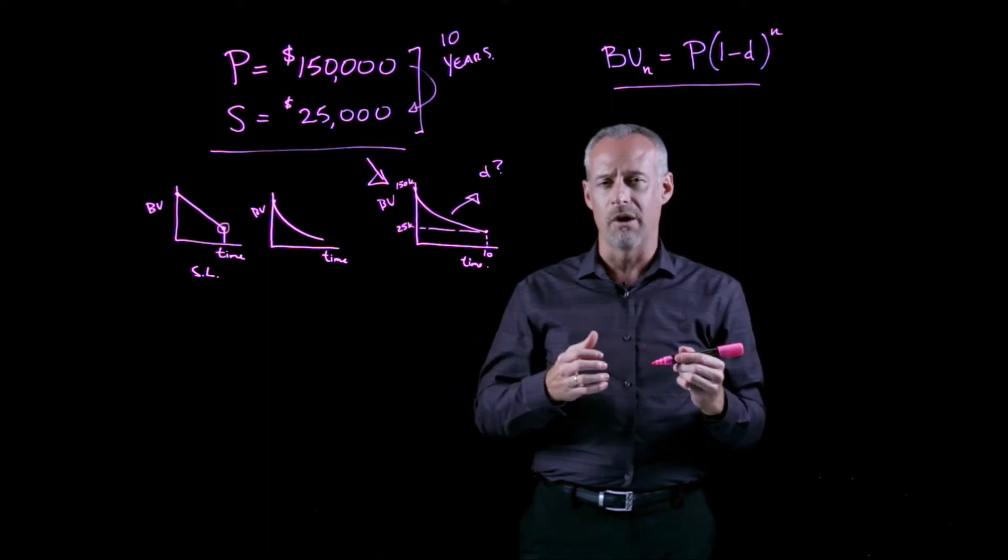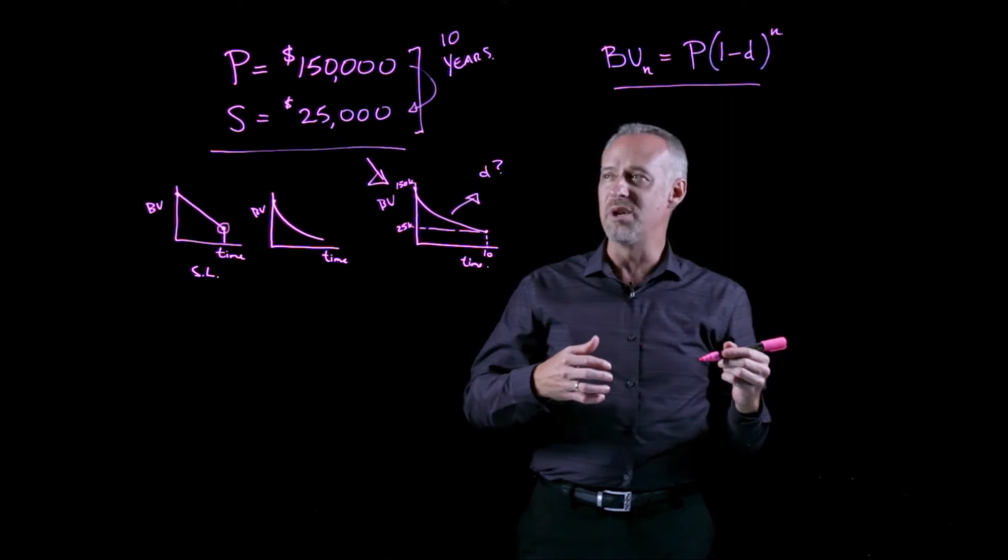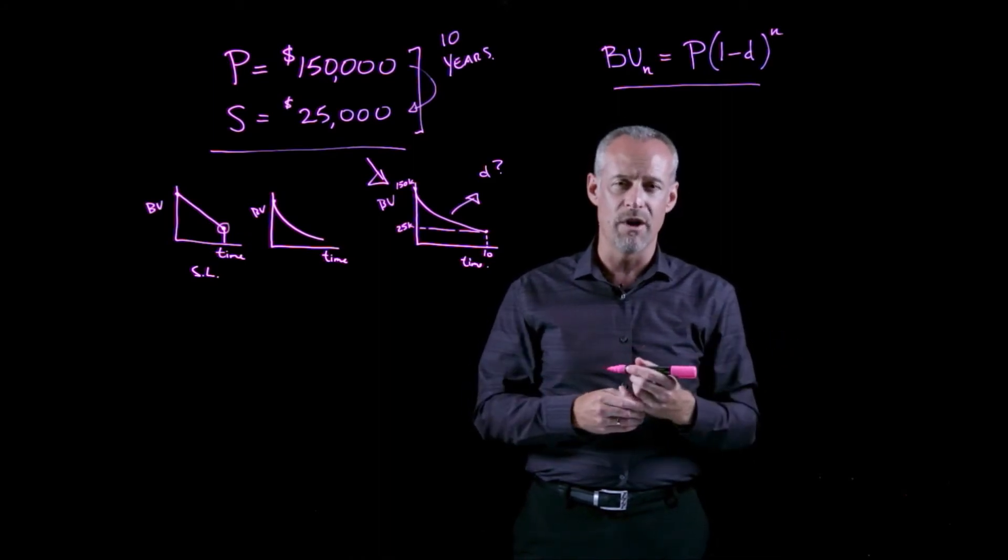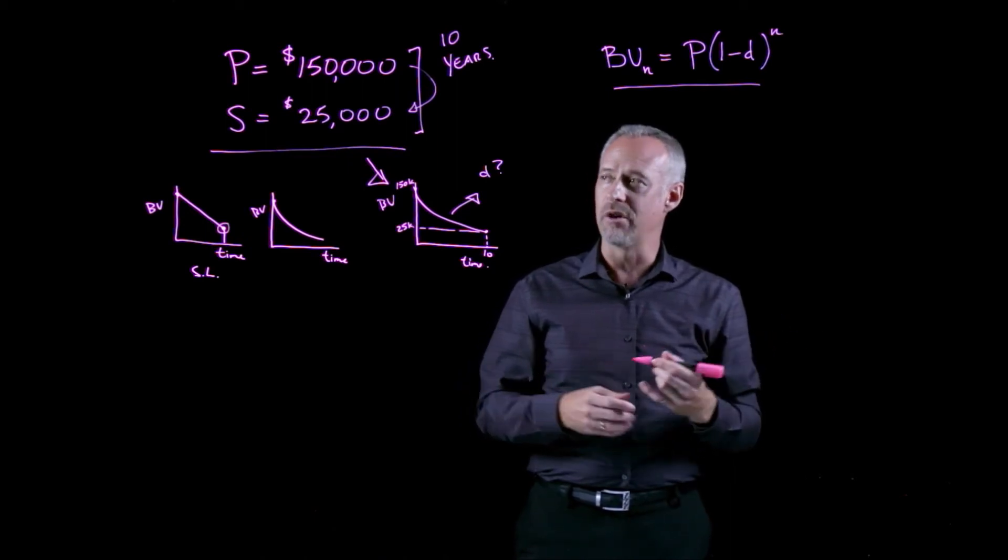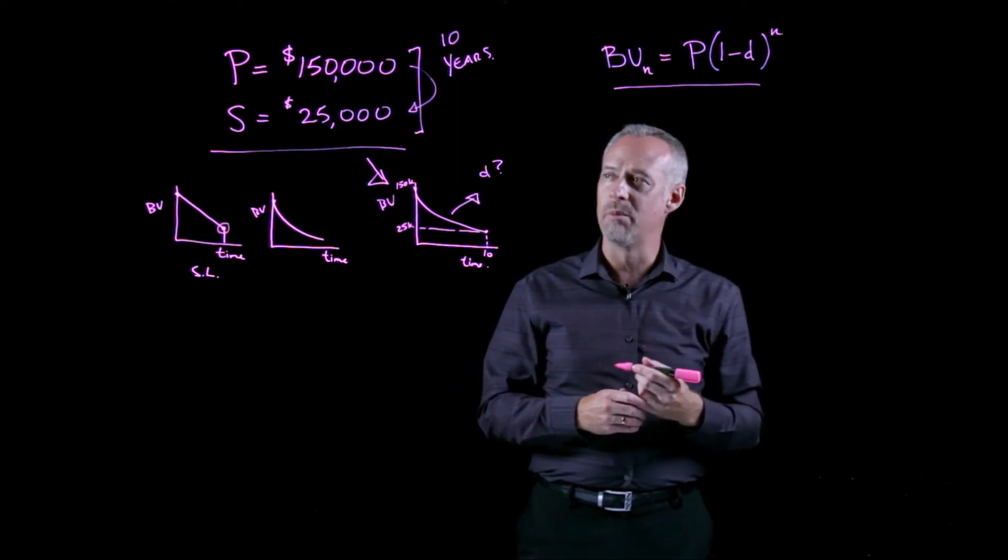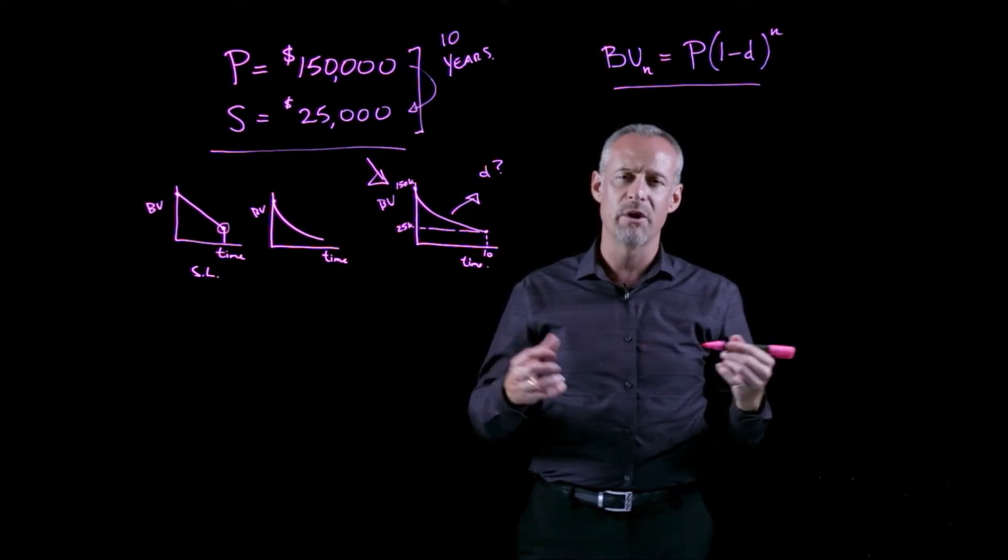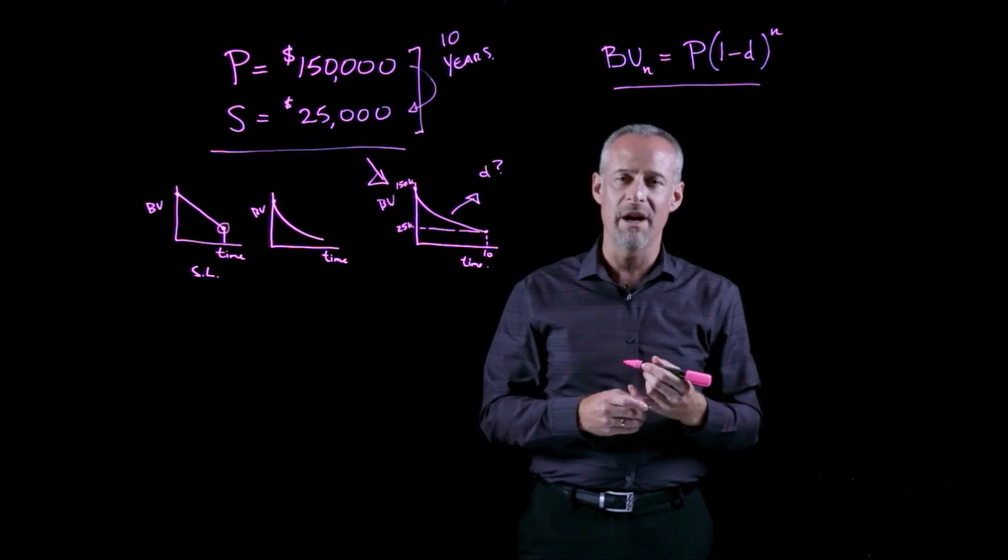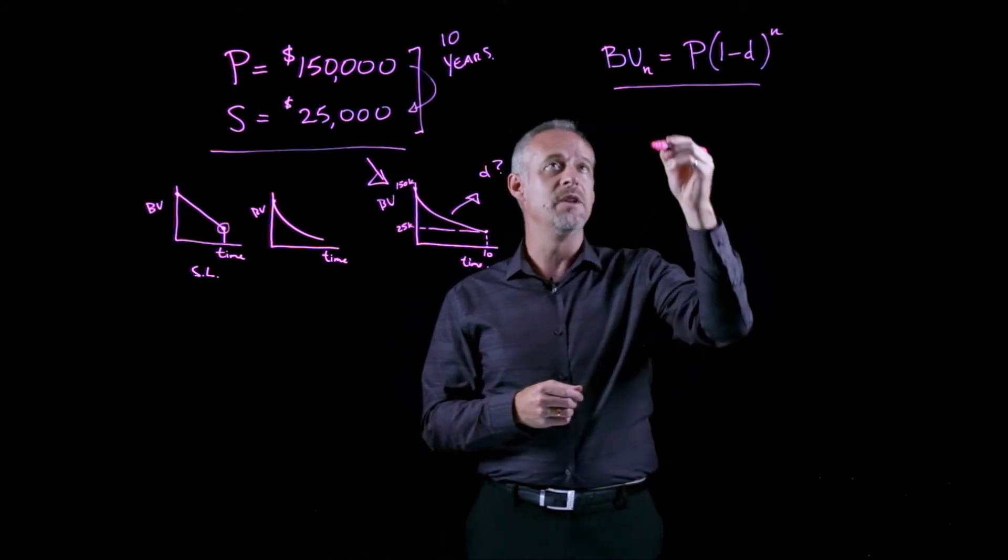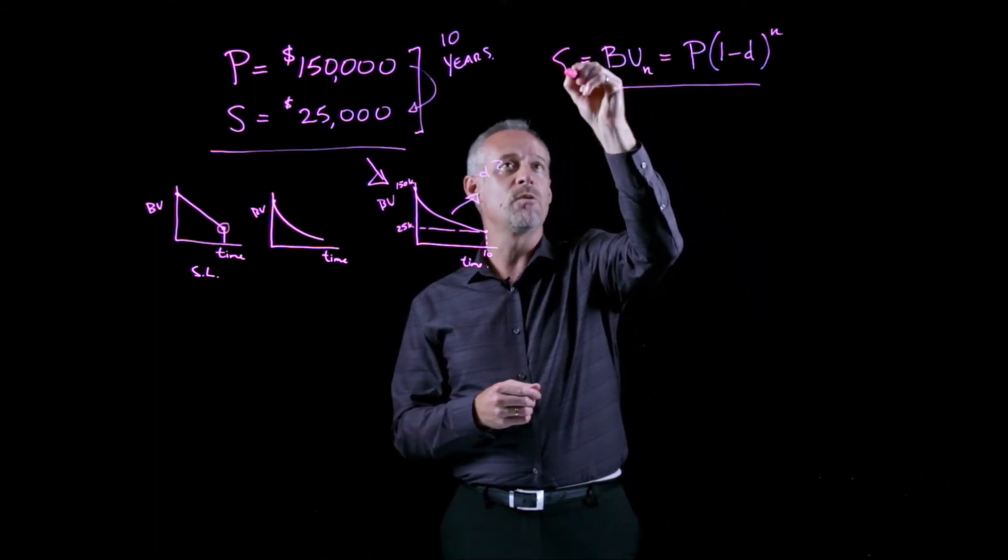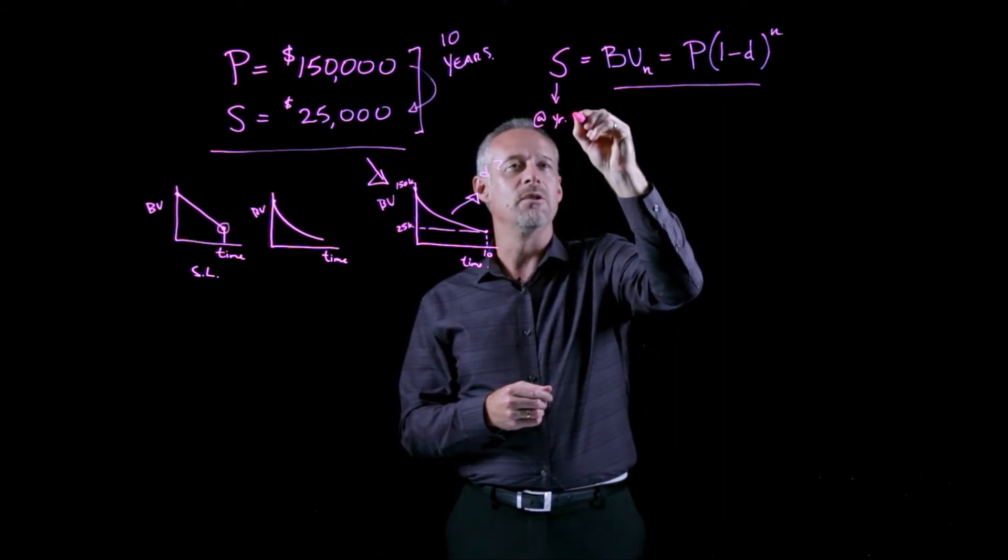For the most part, if we're doing real accounting in Canada, we wouldn't be solving for a depreciation rate. We'd be given a rate based on the class of asset that this is. However, it makes for a good problem for engineering and technical students to solve just to make sure that you're up on your math and also some of your logic. So if I assume that the book value in this instance is equal to the salvage value at year 10.